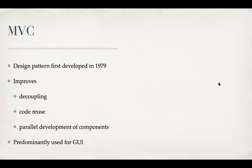It was developed in 1979. It is useful because it improves decoupling, code reuse, and parallel development of components. It's a predominant design pattern for developing graphical user interface apps. So let's try to understand what MVC is.